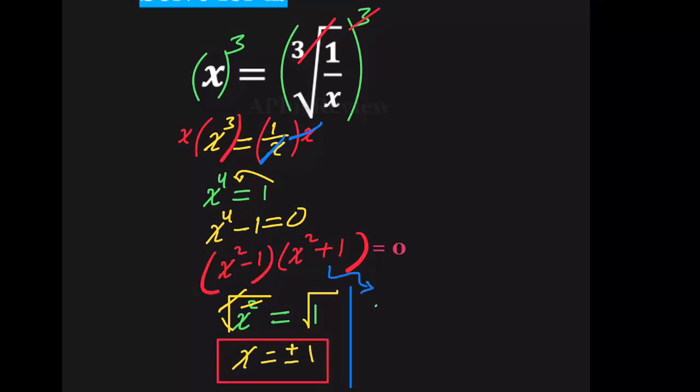From here we have x squared is equal negative 1, and x squared negative 1 is not part of the solution. So we have the values of x: x is equal 1, and x is equal negative 1. Thank you so much.